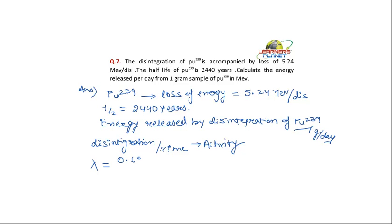Your radioactive decay constant lambda is equal to 0.693 divided by 2440 years. That gives 2.84 × 10⁻³ per year. This is the disintegration per year.